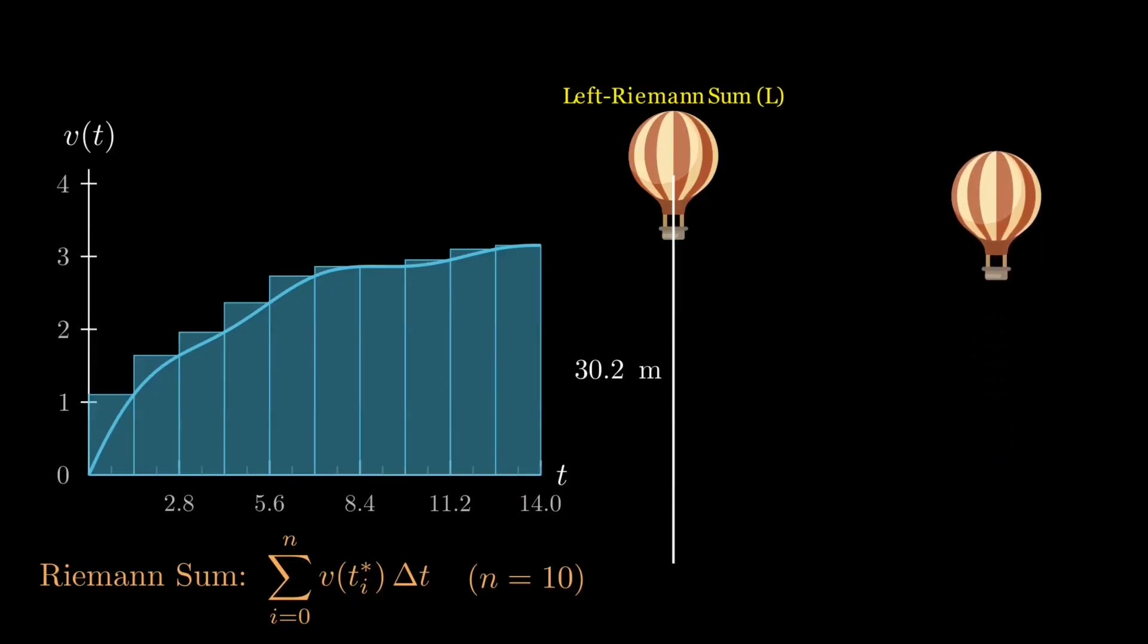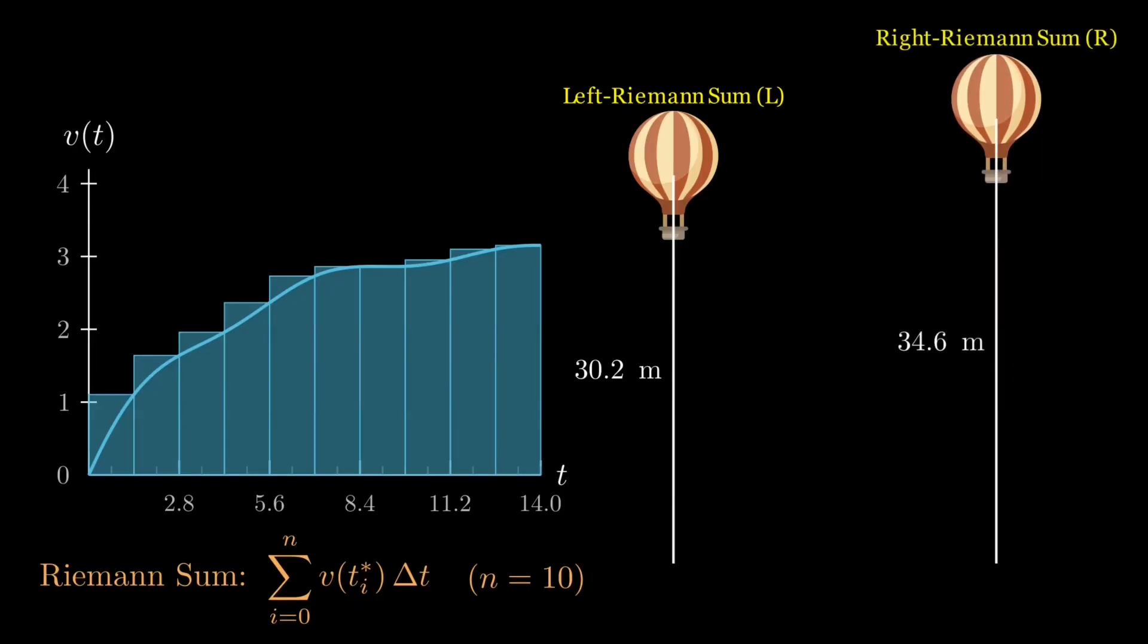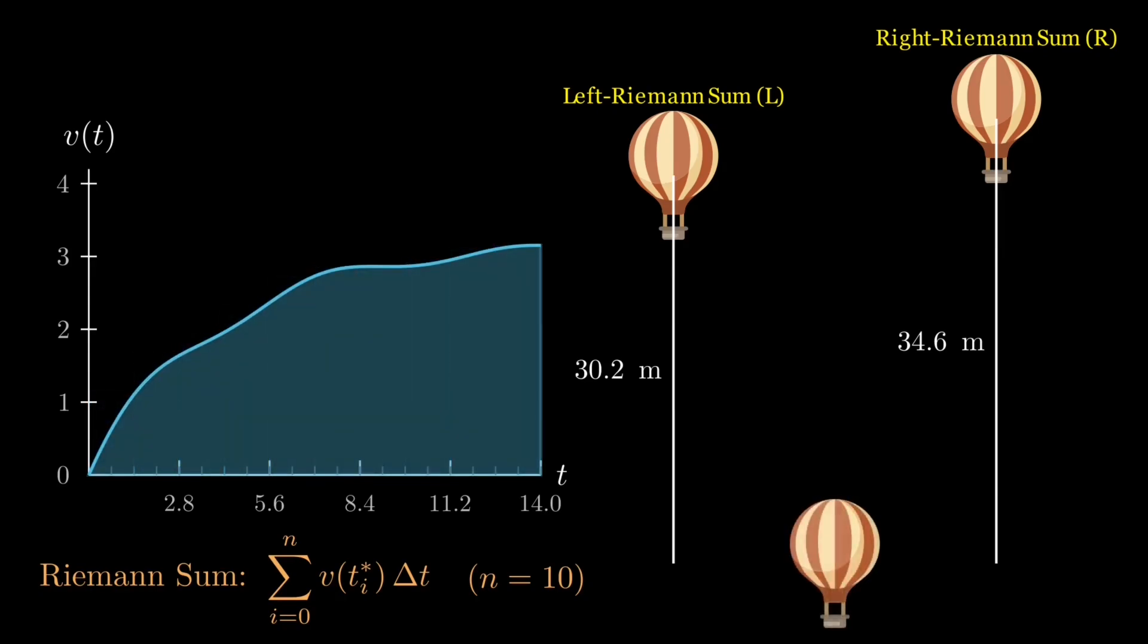The right Riemann sum, on the other hand, overshoots, since each rectangle reaches above the curve's start in its interval, thus making the sum too large. And the exact integral, I, lies neatly between them.